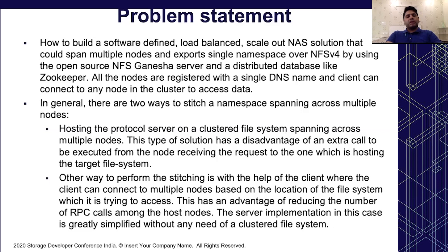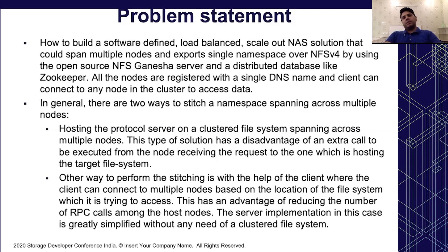In general there are two ways to stitch a namespace spanning across multiple nodes. The first way is hosting the protocol server on a clustered file system spanning across multiple nodes, where the client does not need to know the physical location of the file system. All complexity, including fetching requested data from a remote node, is handled by the server. This has a disadvantage of an extra call executed from the node receiving the request to the one hosting the target file system. One way to mitigate this is to cache recently accessed data on the remote node, but that requires distributed cache coherency and distributed locking.